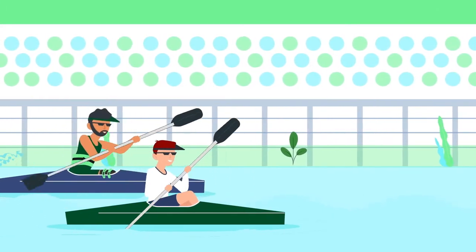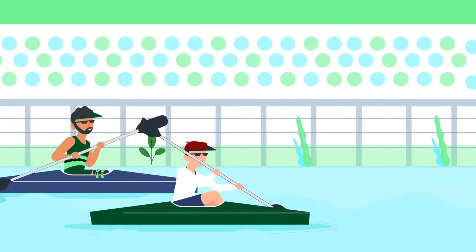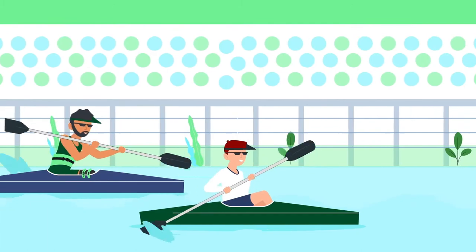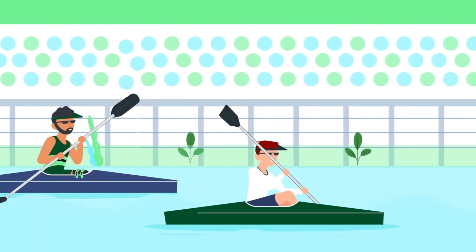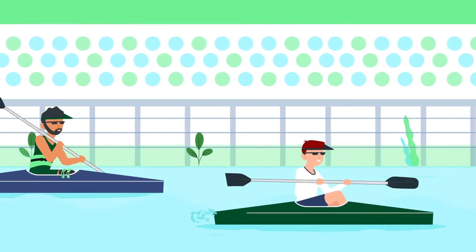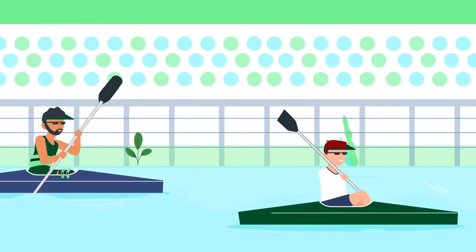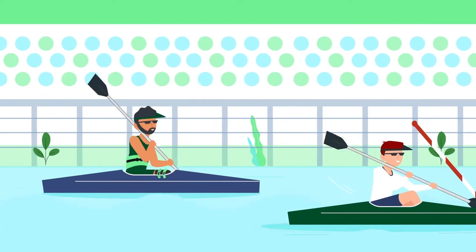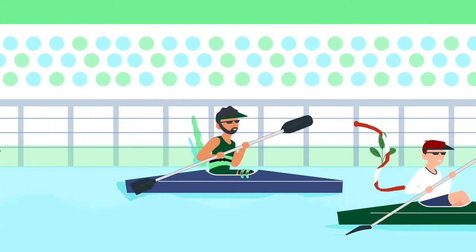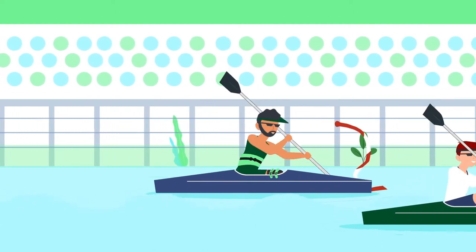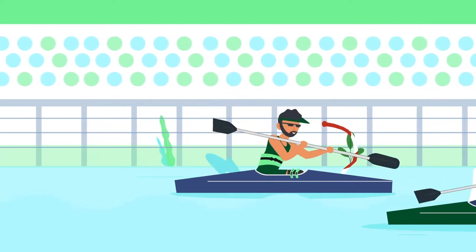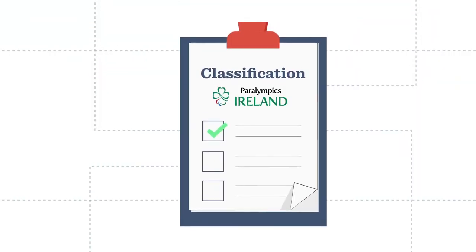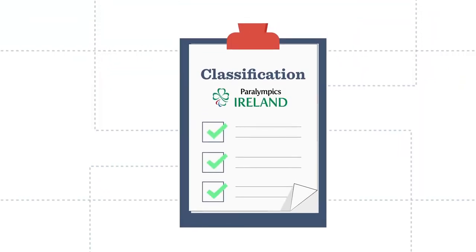Athletes with a disability may experience a competitive disadvantage taking part in sport. That is why a system has been put in place to minimise the impact of impairments on sport performance and to provide a framework for a fair and equitable competition. This system is called classification.